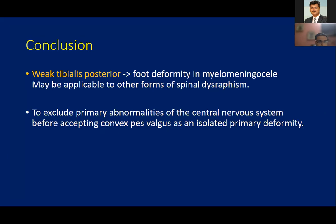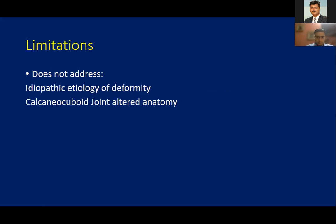They concluded it is important to exclude primary abnormalities of the central nervous system before accepting convex pes valgus as an isolated primary deformity. However, this study does not address the idiopathic etiology of deformity or the calcaneo-cuboid joint altered anatomy, which was studied later by Pullman et al. Thank you.